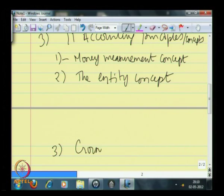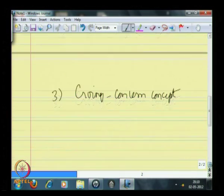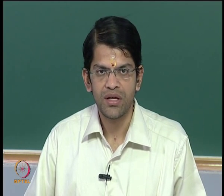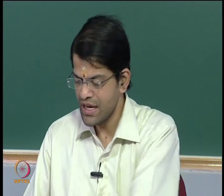The third concept is the going concern concept. As the name suggests, the going concern concept is one that believes that any entity for which we are recording all this information is assumed to exist for a perpetual period of time. This is a fundamental assumption that is reasonably valid, because we are trying to understand the principles of accounting for entities that are assumed to exist forever. The going concern concept justifiably assumes that any entity exists for a perpetual period of time.